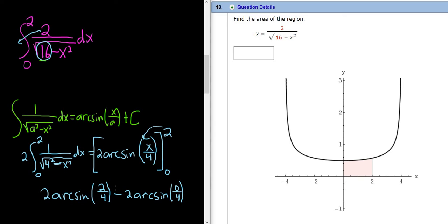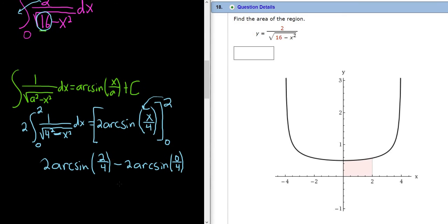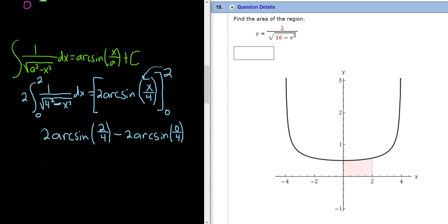So this is equal to 2 arc sine of 1 half minus 2 arc sine of 0.